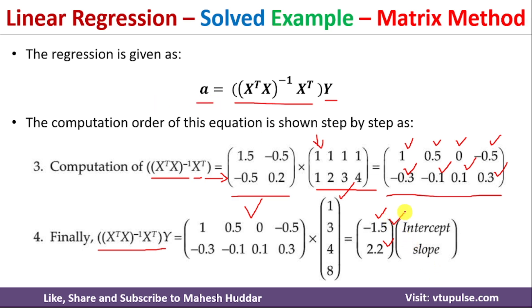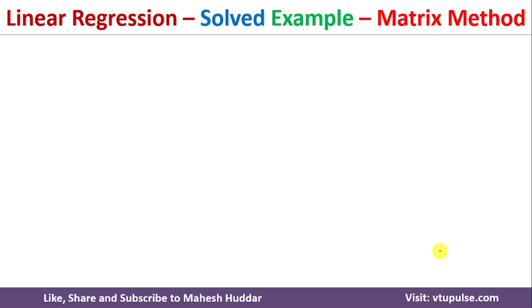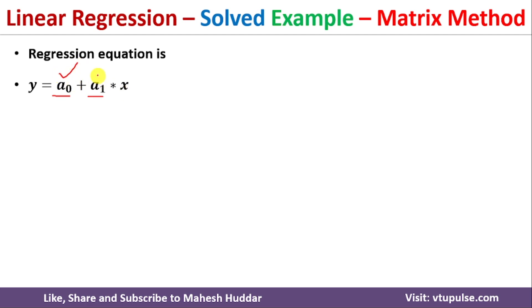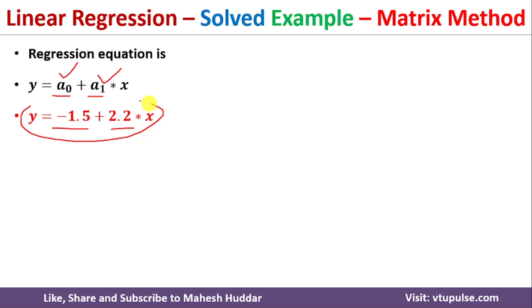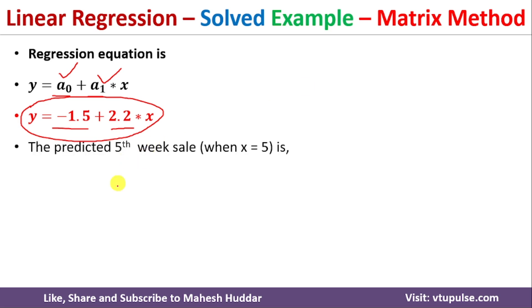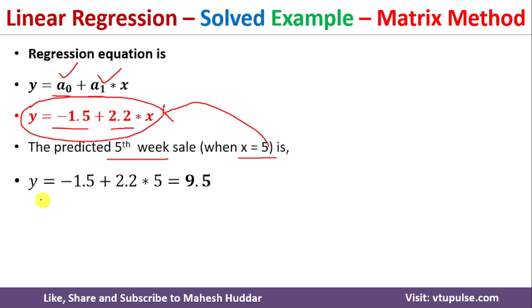The first value of A is the intercept and the second is the slope. The linear regression equation is Y = a0 + a1*X. Substituting our values, a0 = −1.5 and a1 = 2.2, we get Y = −1.5 + 2.2X. To predict sales for the fifth week, we put X = 5: Y = −1.5 + 2.2×5 = 9.5. So the predicted sales for the fifth week is 9.5.